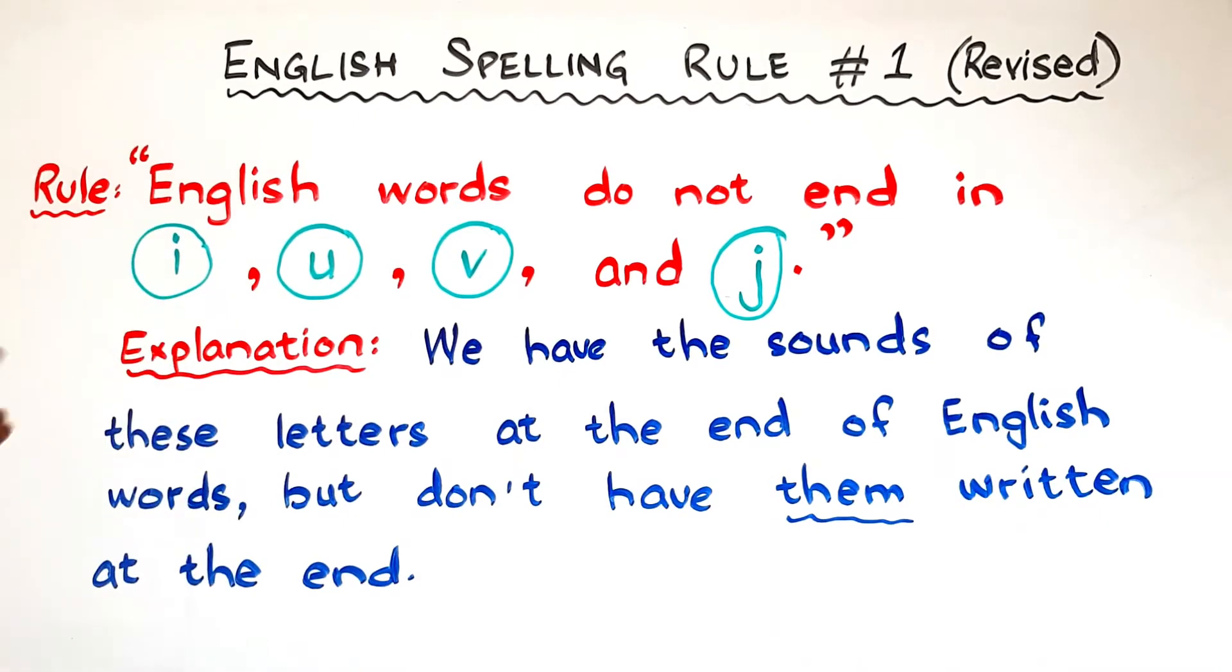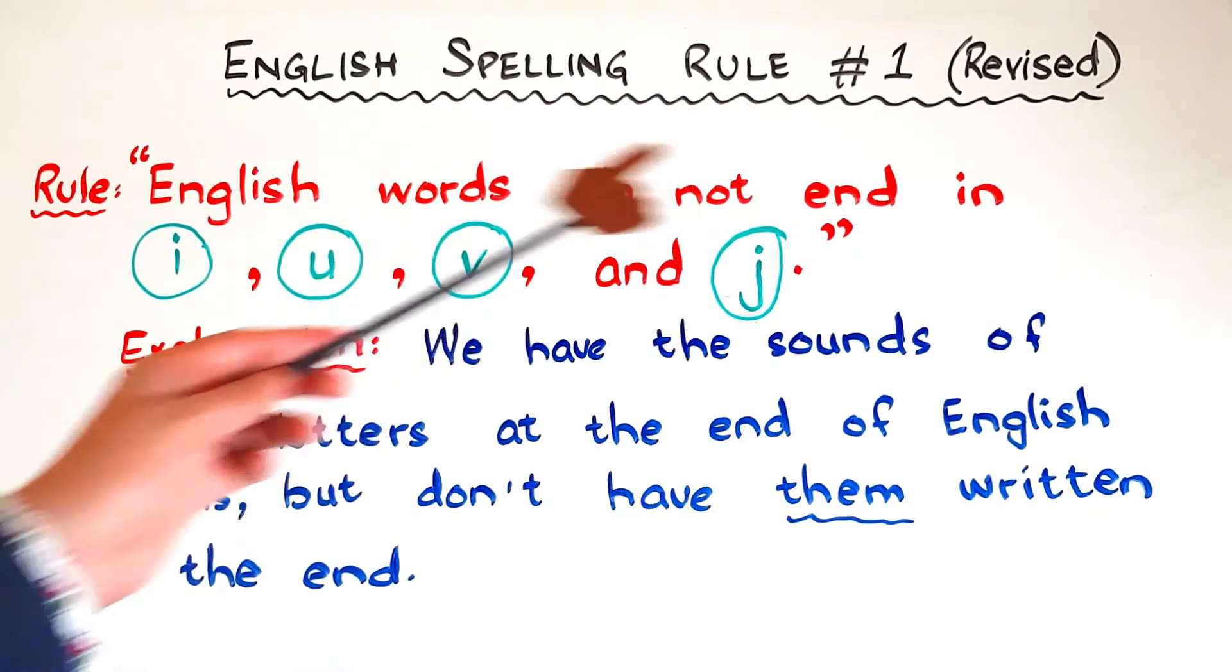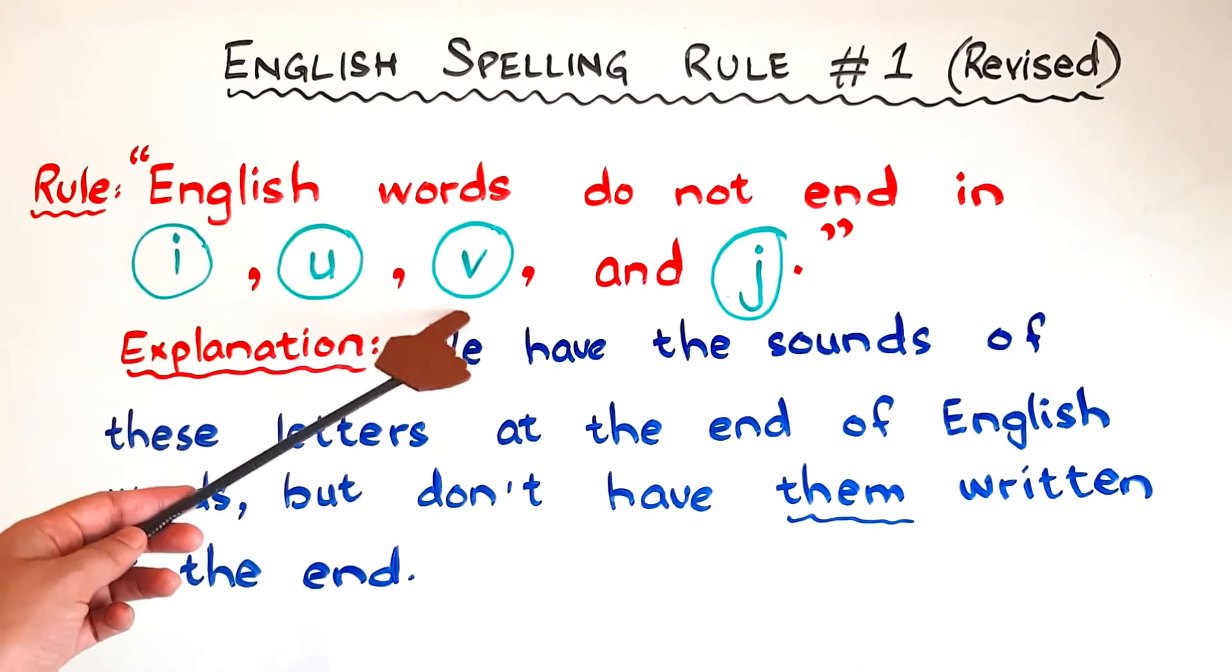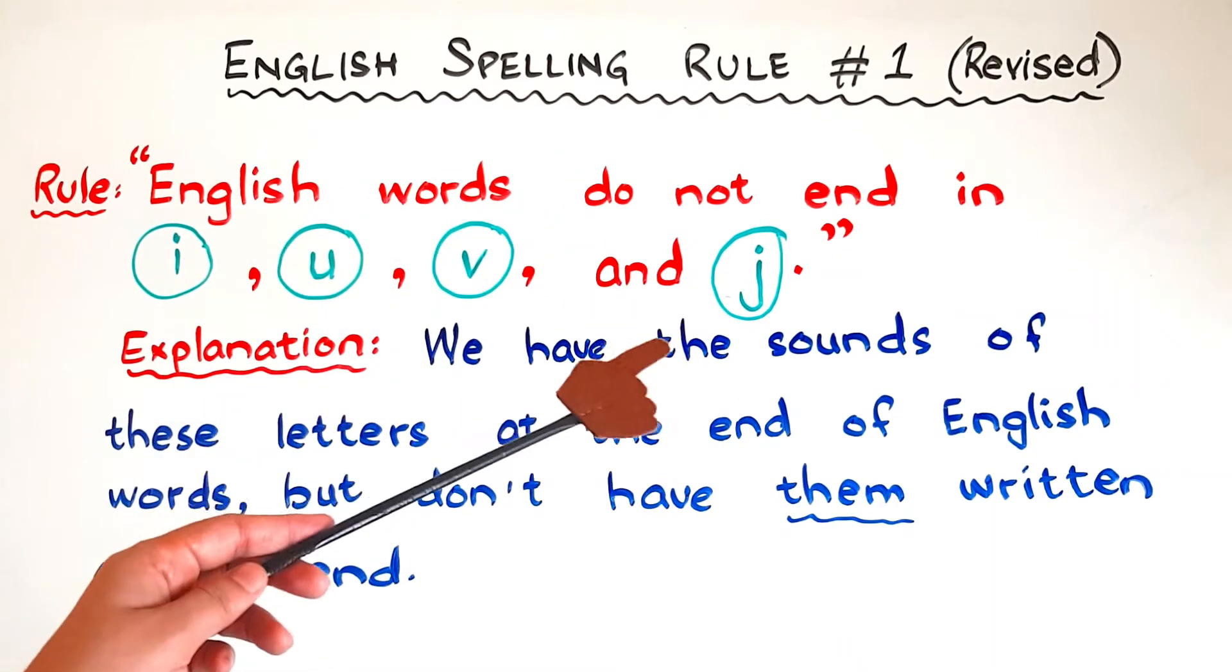So what does the rule say? It says, English words do not end in I, U, V, and J. These four letters.